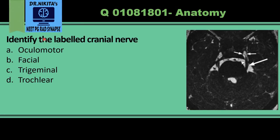Identify the labeled cranial nerve. This is a T2-weighted MRI where the CSF is white — a highly T2-weighted MRI used for cranial nerves. When a patient has symptoms related to cranial nerves like trigeminal neuralgia, sensorineural hearing loss, etc., we use a CISS or DRIVE sequence, which is a heavily T2-weighted 3D sequence for the cranial nerves.